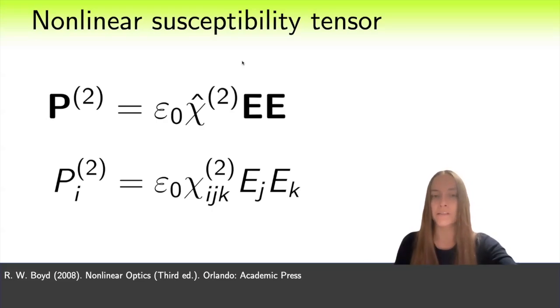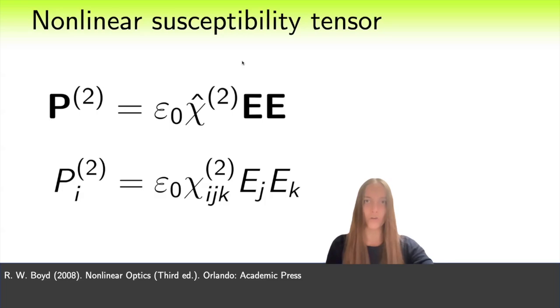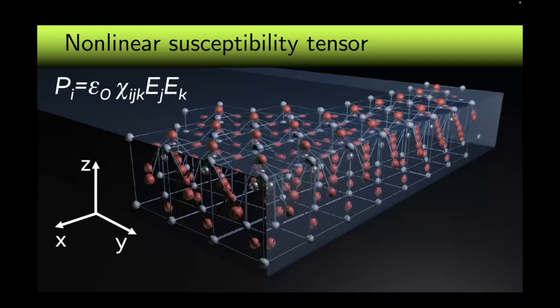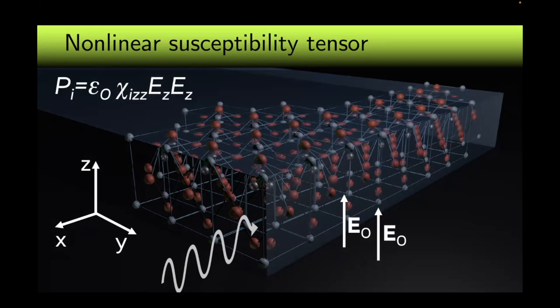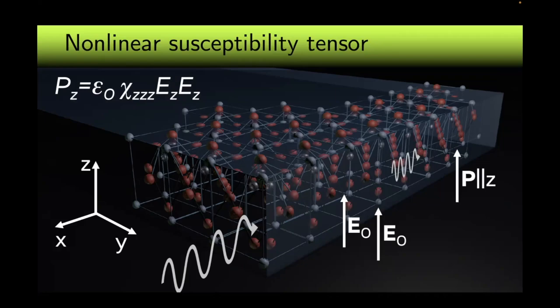As we said earlier, the nonlinear susceptibility is a tensor, so let us write it by components. Now we will take a closer look at what this notation means. Let's say we have a medium that can generate a second harmonic. And the incident plane wave is linearly polarized and the electric field polarized along the z-axis. We substitute the electric field along the z into our formula. It enters the formula twice. If we want to have the second harmonic polarization also along the z-axis, then we need to have P_zzz tensor component.